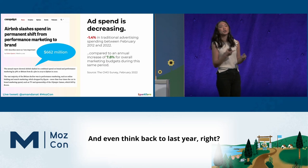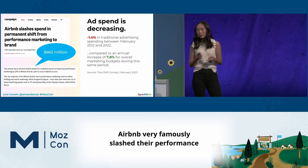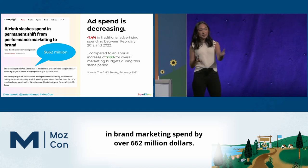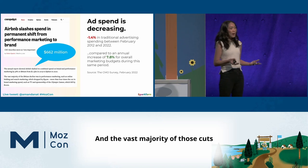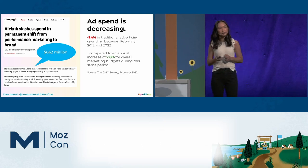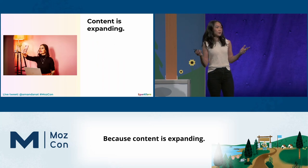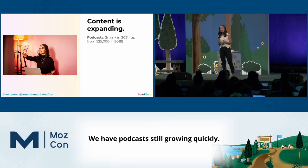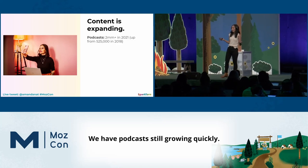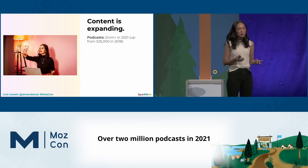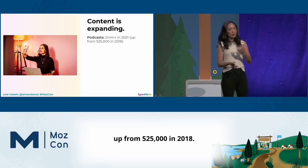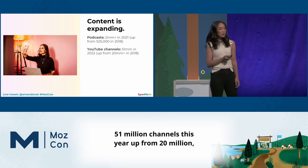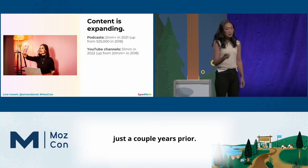Think back to last year. Airbnb very famously slashed their performance and brand marketing spend by over $662 million, and the vast majority of those cuts were in performance marketing. Because content is expanding — content isn't just blogs anymore. We have podcasts, still growing quickly, over 2 million podcasts in 2021, up from 525,000 in 2018. YouTube channels: 51 million channels this year, up from 20 million just a couple years prior.